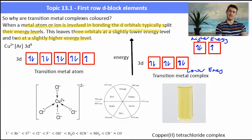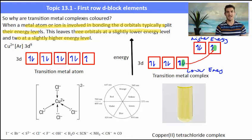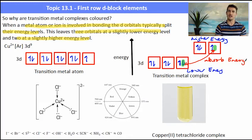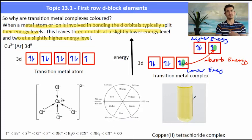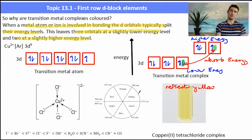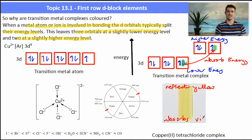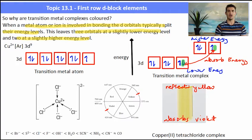If this compound absorbs light, one of the electrons from the lower orbital will absorb the light and be promoted to a higher energy orbital. It absorbs the light, becomes excited, and then as it releases the light, it releases light of its specific wavelength, which we see as the colour that is released. Here the copper 2+ complex is a yellow colour, so it's reflecting yellow light. Yellow is opposite violet on the colour wheel, which means this complex is absorbing violet light. That electron is being promoted into a higher energy level, then releasing or reflecting light of a yellow wavelength.